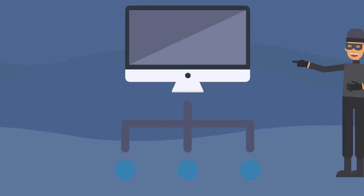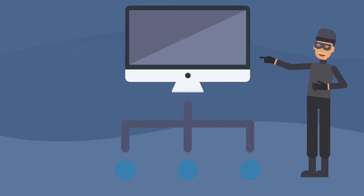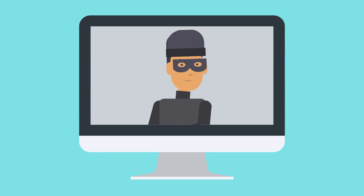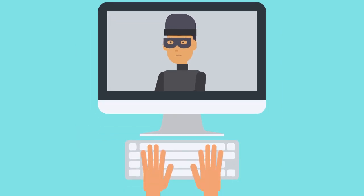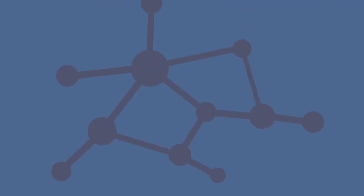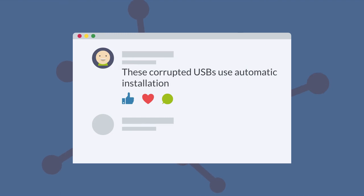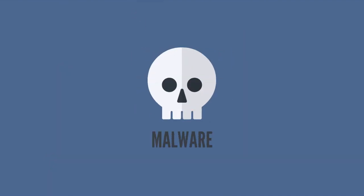Once on your computer, this malware will allow the attacker to advance into your system and steal all your data. You don't even have to open a file on the USB drive to get infected. Unfortunately, hackers have learned how to compromise USB devices so that computers falsely interpret the flash drive as a printer or keyboard, for example. These corrupted USBs use automatic installation, meaning your system will automatically run the preloaded malware the moment you plug in the device.